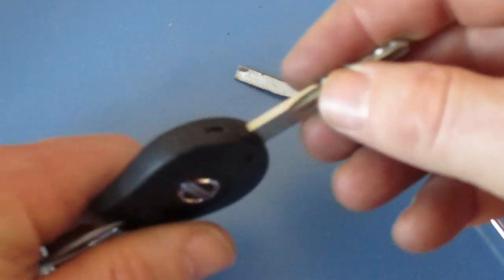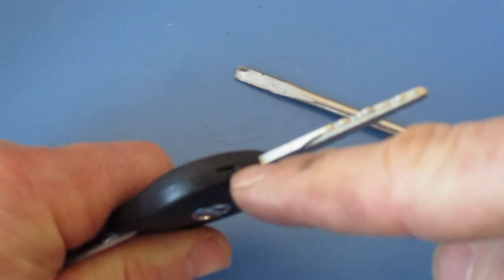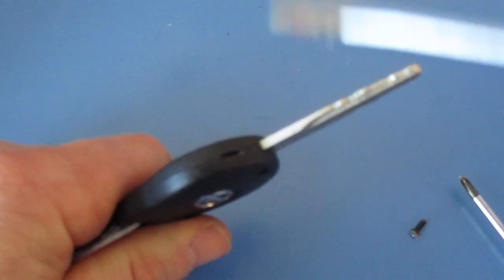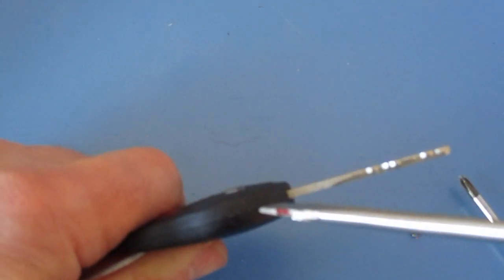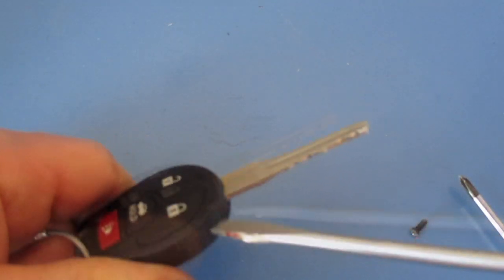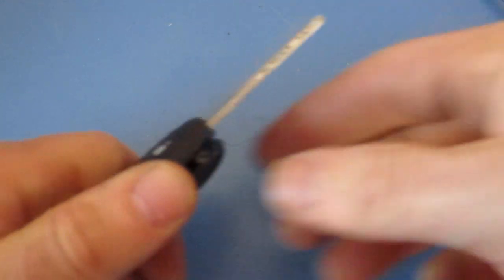Now that you've done that, turn the key towards the front where the key is and you're going to see this little crack. Stick your straight screwdriver in there. Once it's in, just twist and it will pop open.